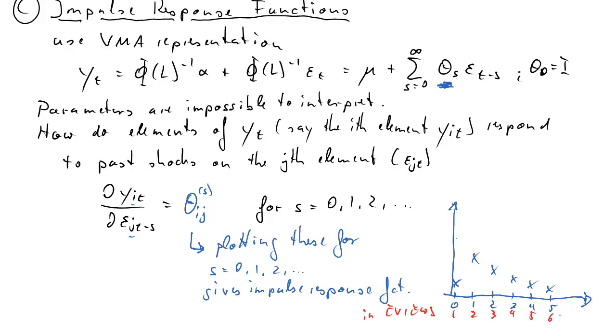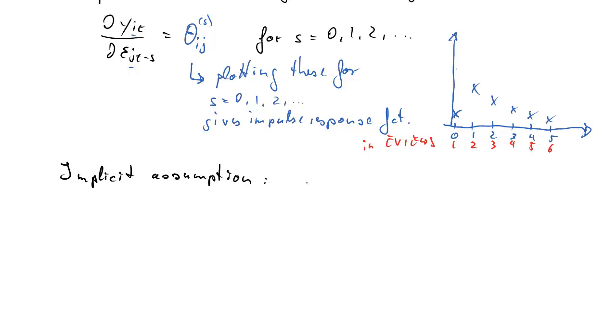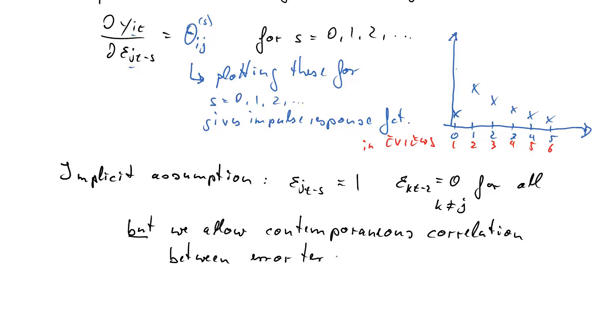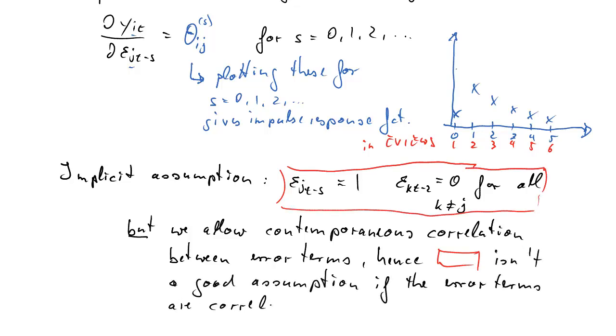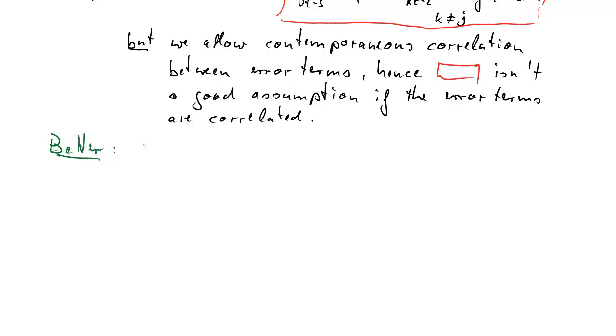So the i-th element of the s-th theta. If we plot these elements for s equals 0 to infinity, basically, we get impulse response function. We would get for s equals 0, the immediate response of the i-th variable to a shock in the j-th variable. Then we get the response to a shock 1 period before, that would be at s equals 1, or 2 periods before and so forth. These tend to fizzle out. Now in E-views, when you create the plots, the numbering is somewhat different. What is 0 here is 1 in E-views and so forth. Now an implicit assumption we make here is that we set a particular shock j, s periods ago to 1, but all other shocks to all other elements at the same period at t minus s to 0 for all other elements. We basically make them uncorrelated. However, we earlier said that we would allow contemporaneous correlation between the error terms. So somehow these two don't go together.